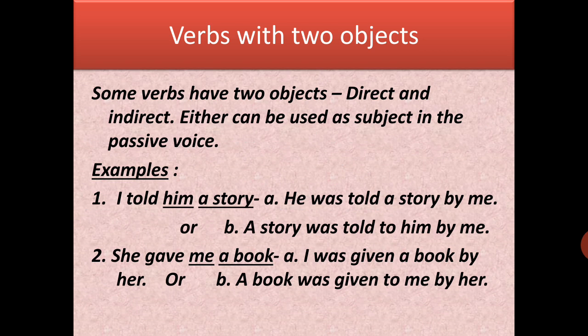Another example: 'She gave me a book.' 'A book' is the direct object; 'me' is the indirect object. Bringing indirect object forward: 'me' becomes 'I' — 'I was given a book by her.' Bringing direct object forward: 'A book was given to me by her.' You can bring either the direct or indirect object forward as the main subject.